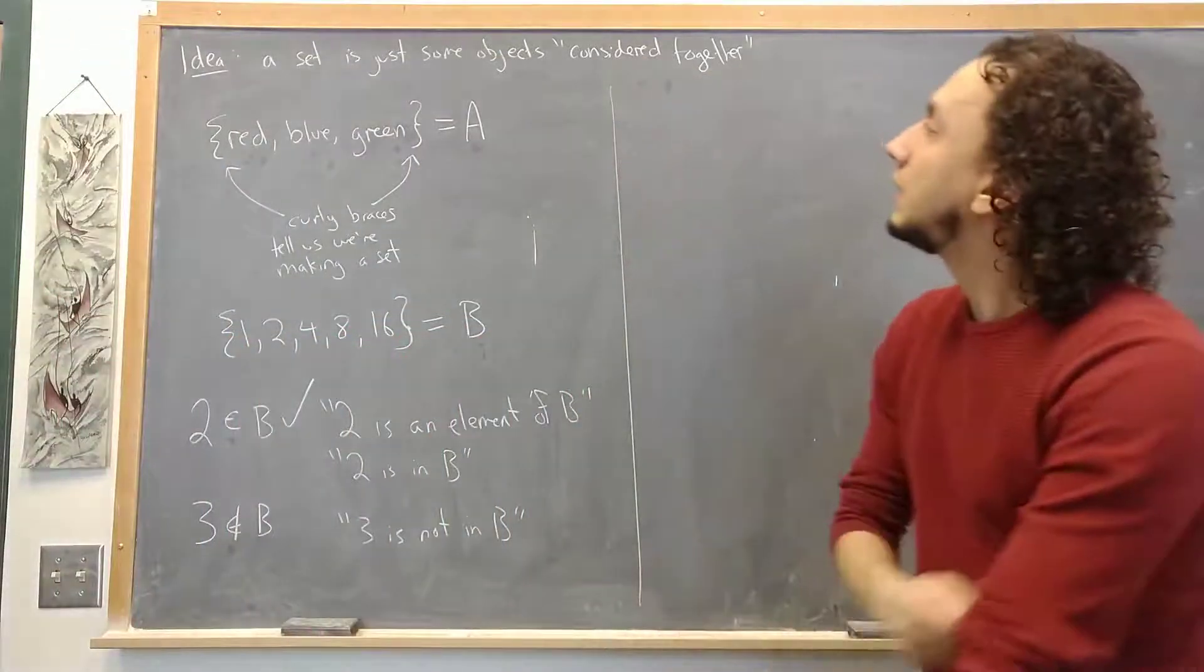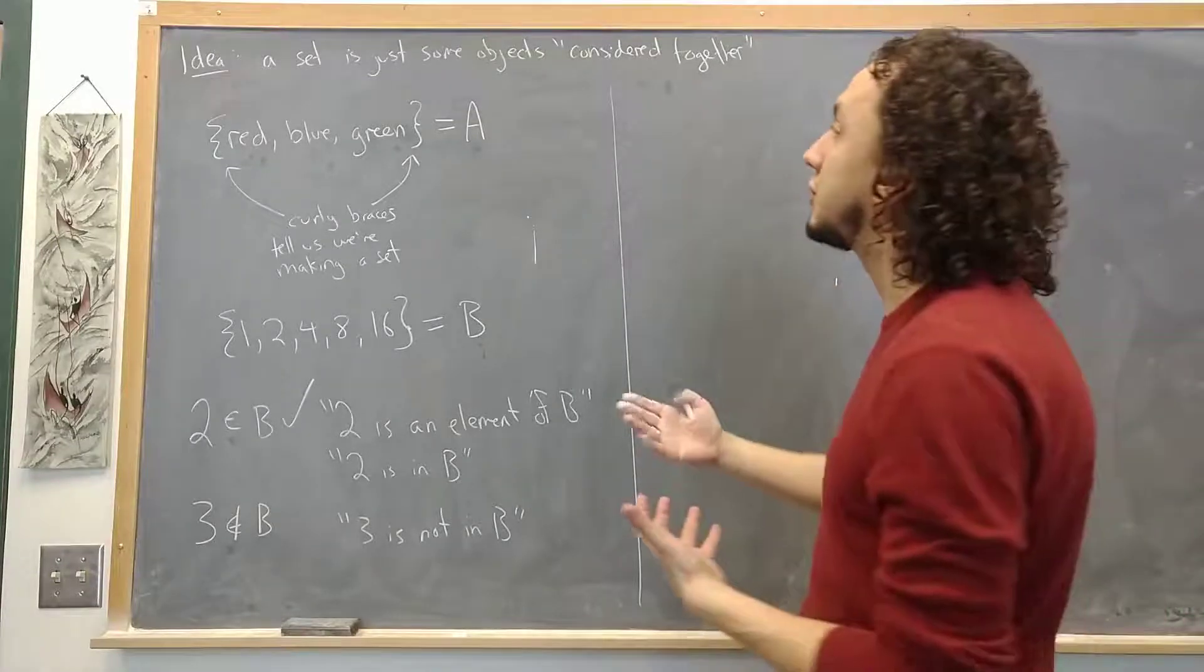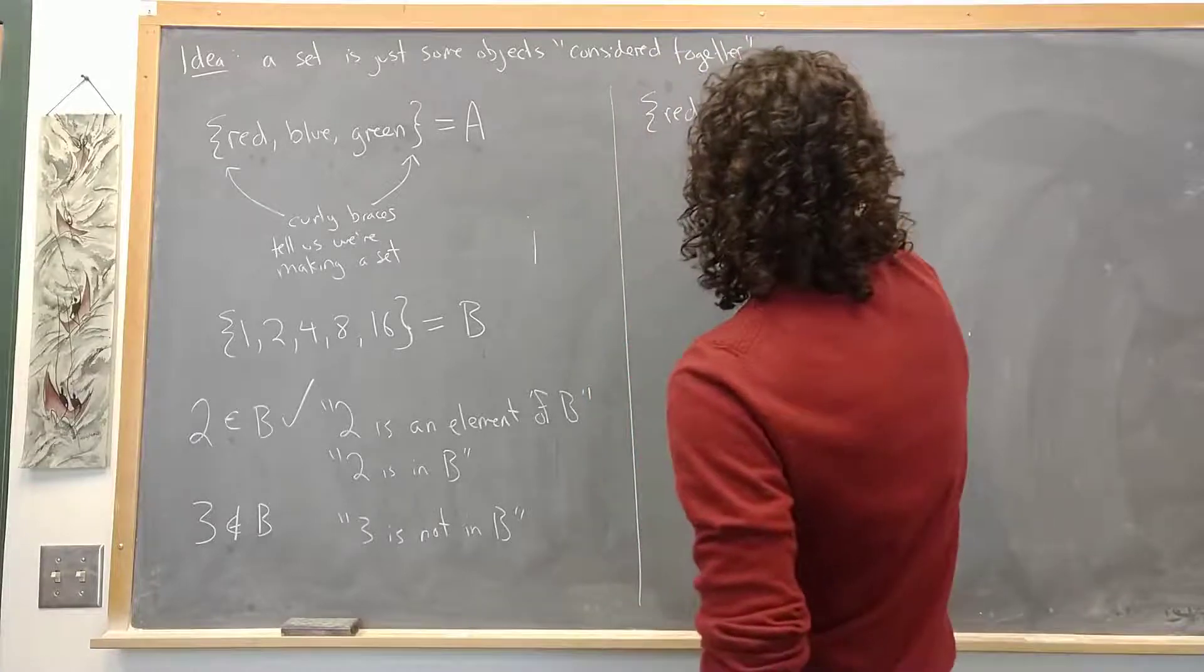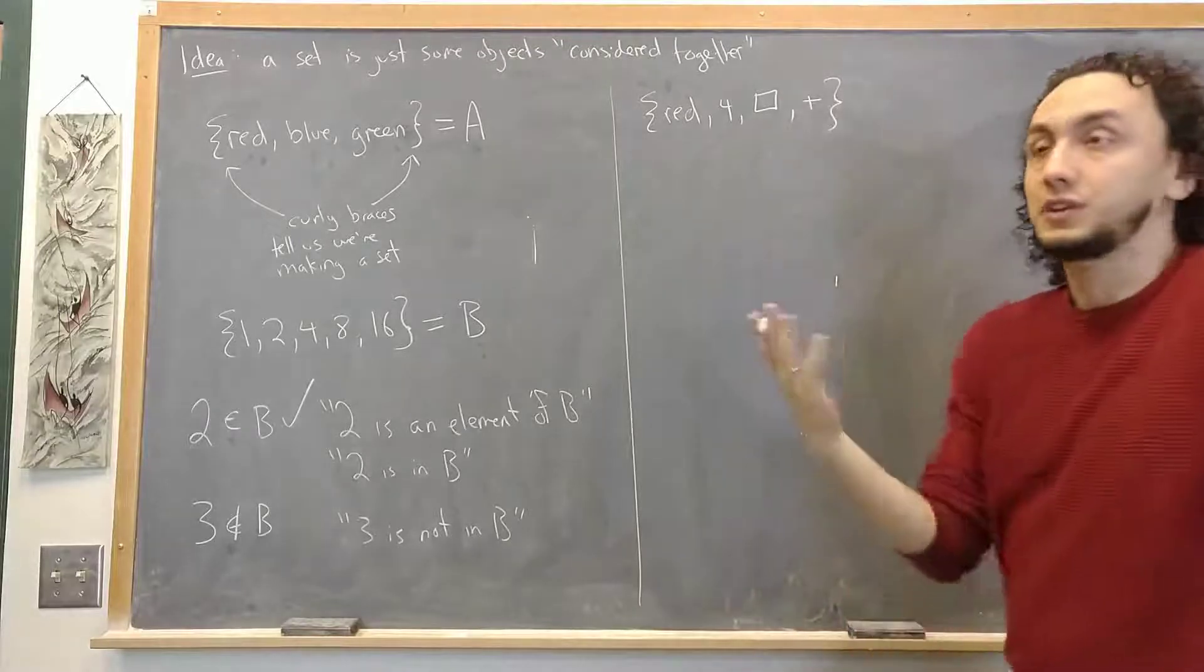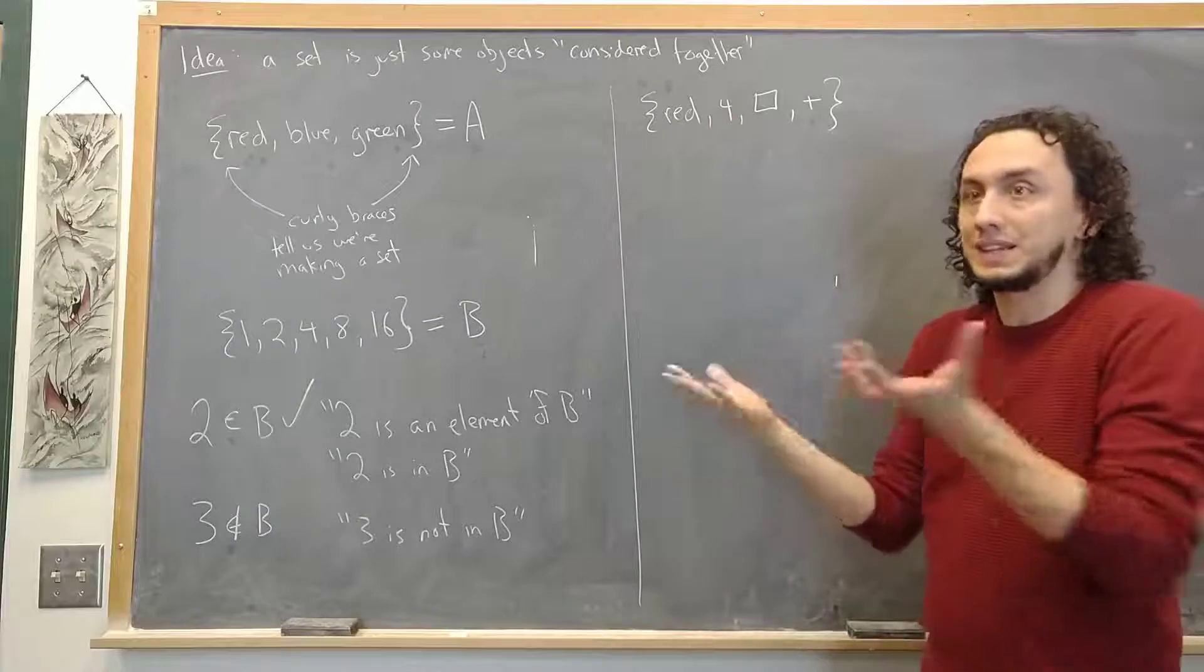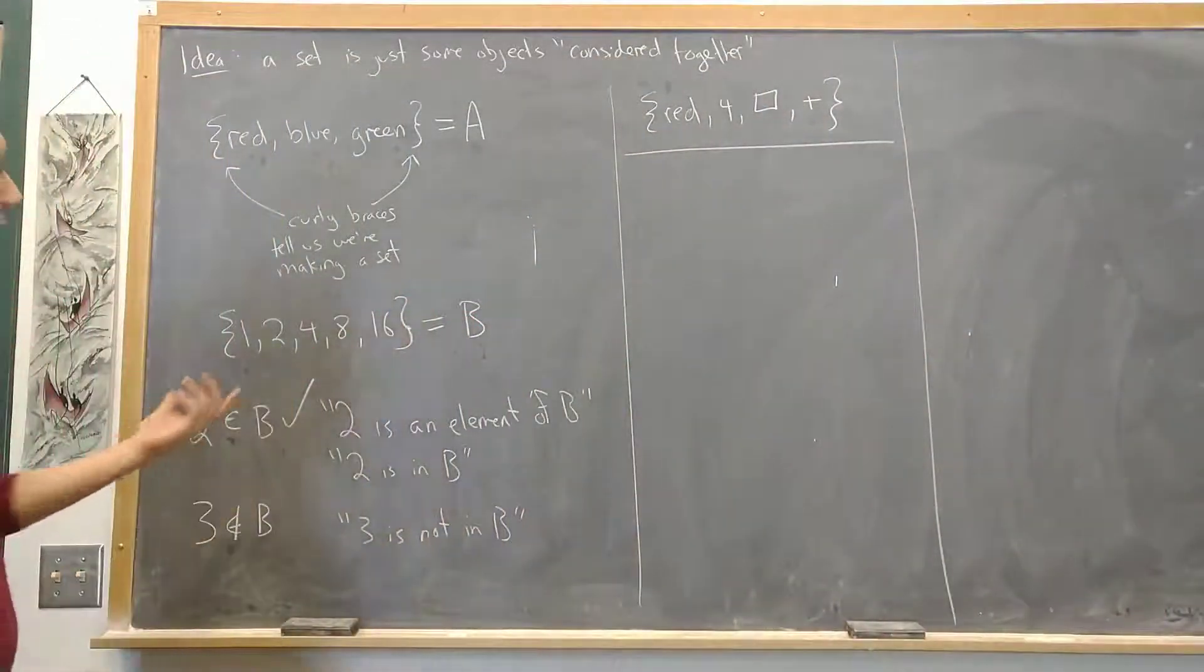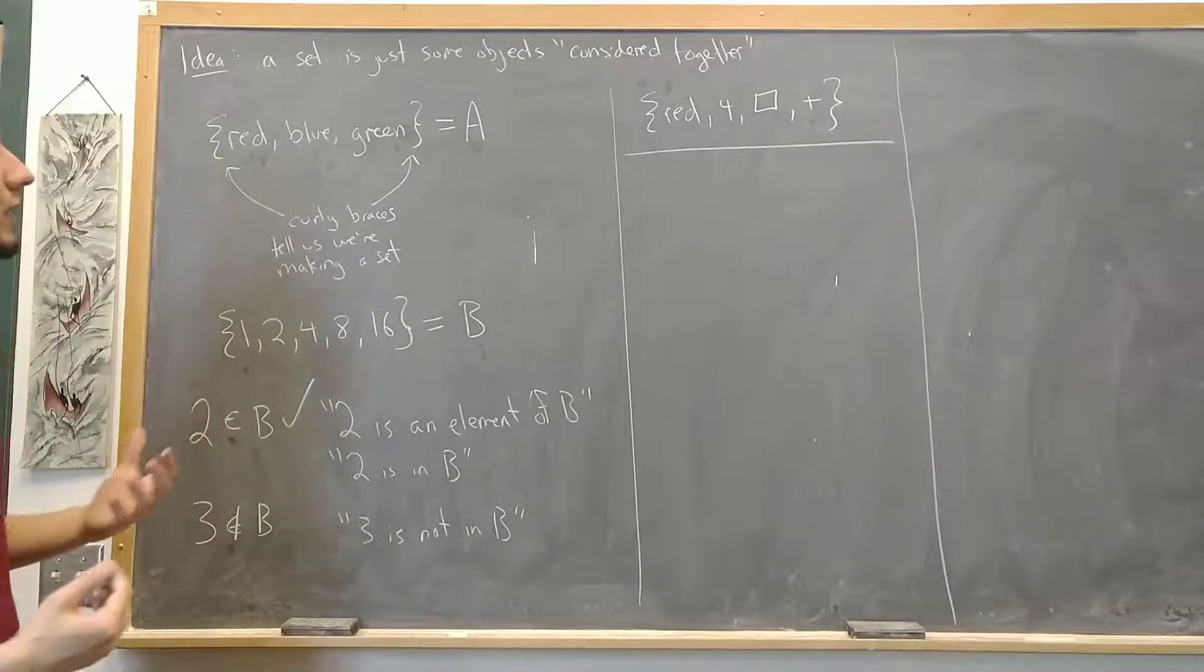So to reiterate a set is just some objects considered together. There's no real restriction on what those objects could be. I could have a set that includes the color red, the number 4, maybe a square, and the concept of addition or the function that represents addition. And it's kind of a weird set but in principle I could consider these objects together. Normally we consider sets of more familiar things like sets of numbers or sets of functions. But the point is that there's no theoretical restriction on it.